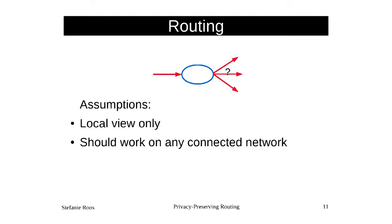In this work, we make essentially no assumption about what the payment network looks like, apart from one: it needs to be connected. If you have two components with no payment channel between them, there's no way to get a payment from one component to another. Apart from this connectivity requirement, this would work with any network structure.